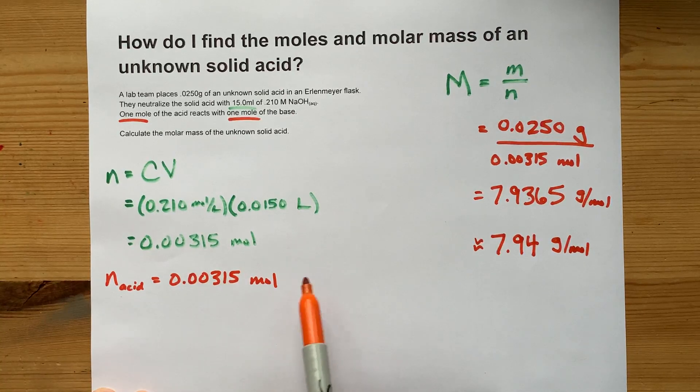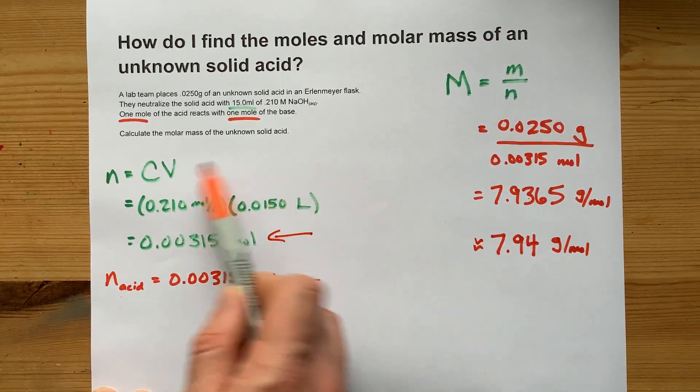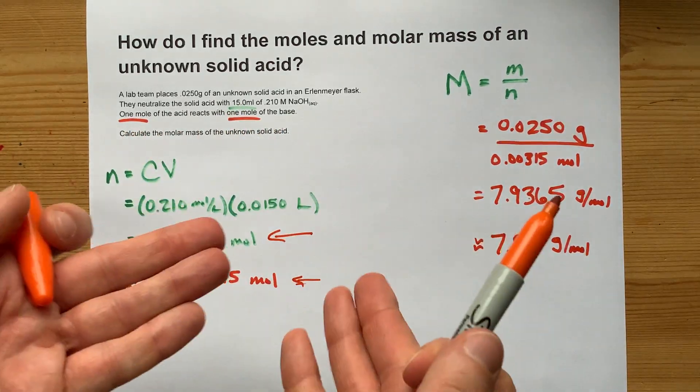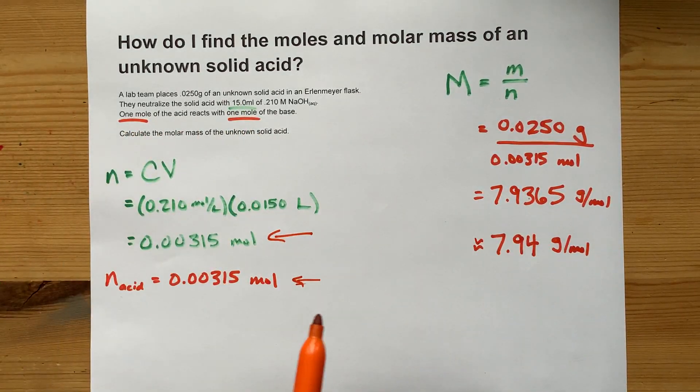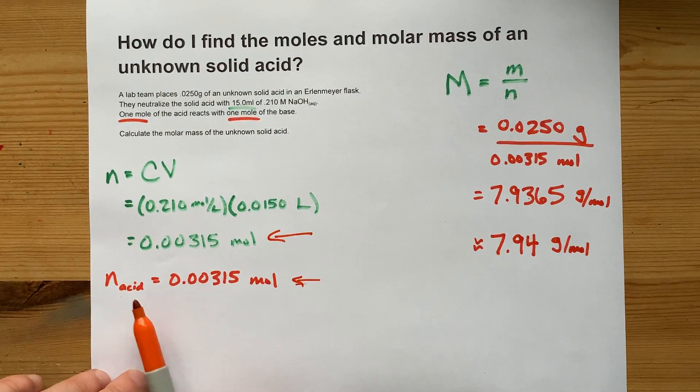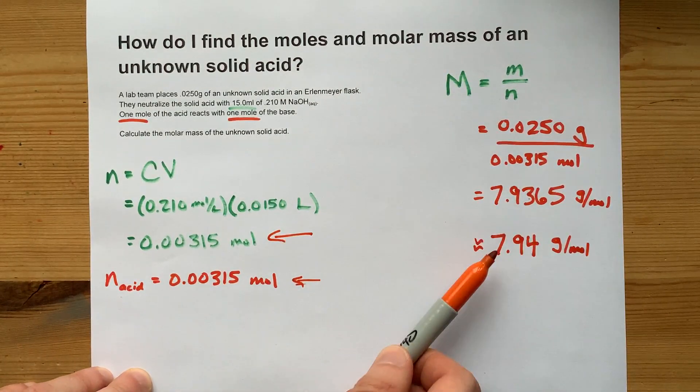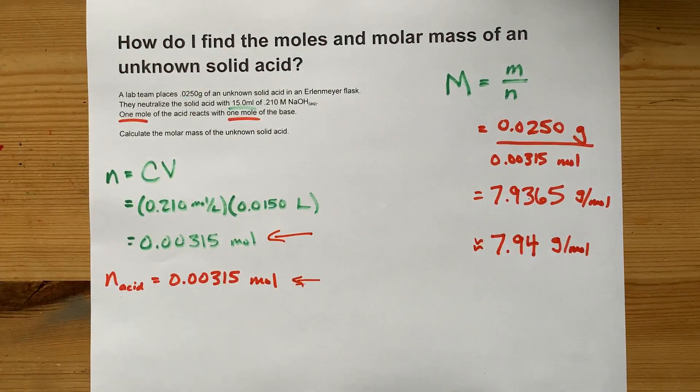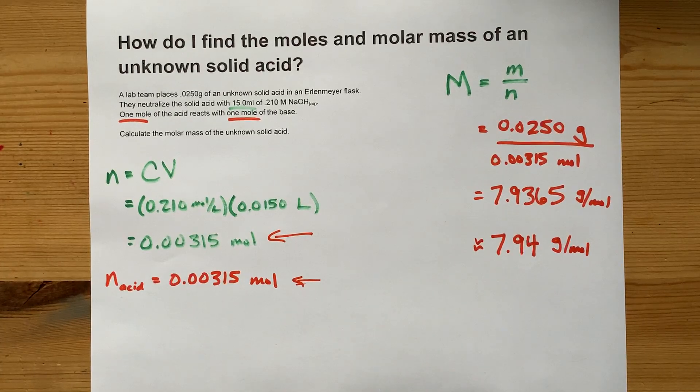You can calculate the number of moles of acid from the number of moles of base as long as you're told what the ratio is, or if you can figure it out for yourself. And then you can use that number of moles to get the molar mass. Thanks for being with us, and best of luck.